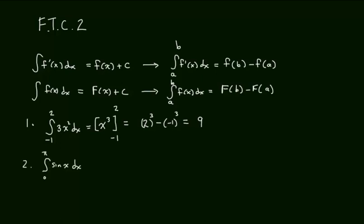Number 2 is the integral from 0 to pi of sine of x dx. Oops, I meant the integral from 0 to pi of quantity 1 plus sine of x dx. First thing is, find the antiderivative, and the antiderivative of 1 is x. The antiderivative of sine of x is negative cosine of x. And I'm going to take that from 0 to pi.